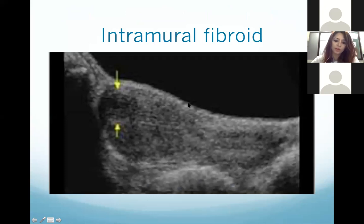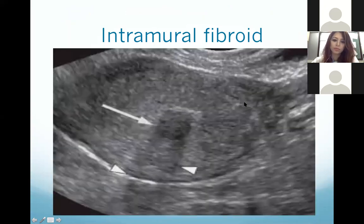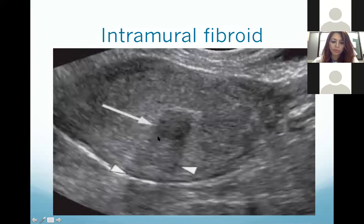Here you can see an ultrasound image of a uterus. This black area is an intramural fibroid in the region of the fundus. This is another image of the uterus — this is the endometrium, the white line — and this round black area is an intramural fibroid within the myometrium.